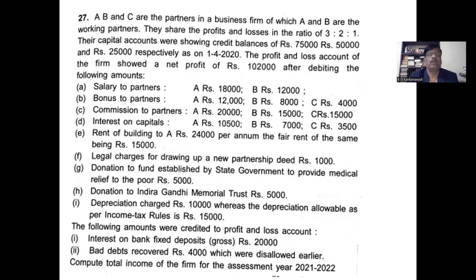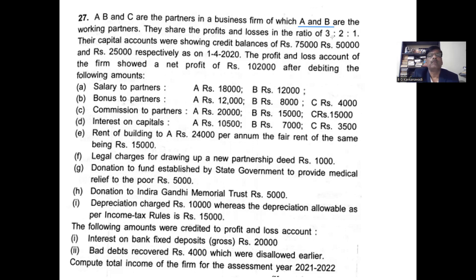Question number 27: A, B, and C are partners in a business. A and B are the working partners, so consider this for calculating working partner remuneration. The capitals of the partners are 75,000, 50,000, and 25,000 — so the total capital of the firm is 1,50,000 at the beginning.